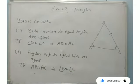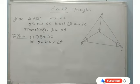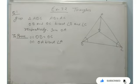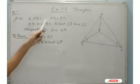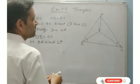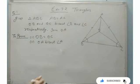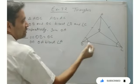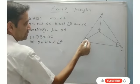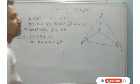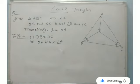Now we are going to discuss exercise 7.2, question number 1. In triangle ABC, AB is equal to AC — it is given. OB and OC bisect angle B and angle C respectively, meaning each angle is split into two equal halves. We have joined OA also. We have to prove that OB is equal to OC, and OA bisects angle A. It's a very simple question.